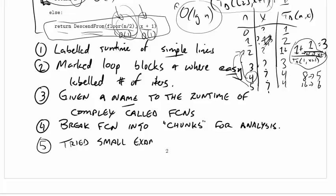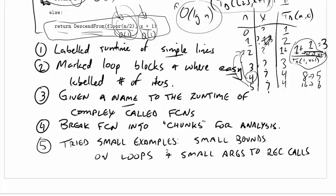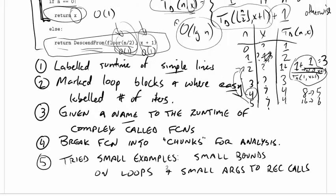And in this case, what that meant was small bounds on loops, remember making that table for the first loop, and then we made a table for the second loop as well. And small arguments to recursive calls, and that's like the table we made right up here on the page right now.